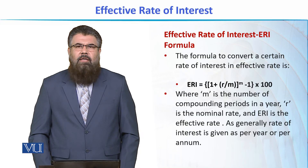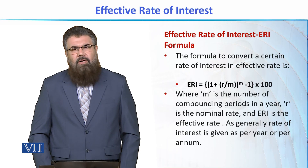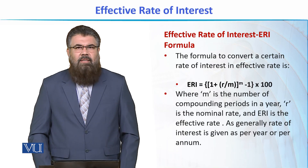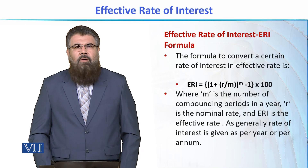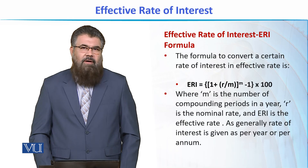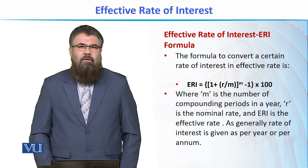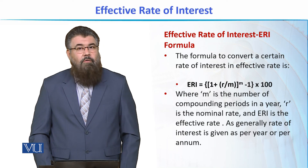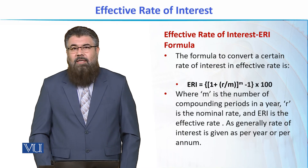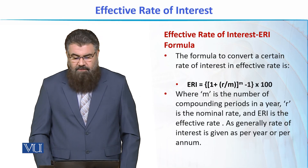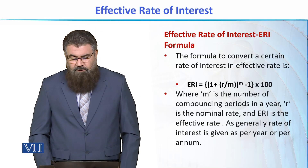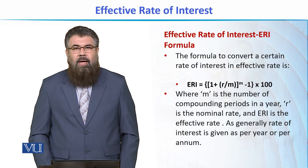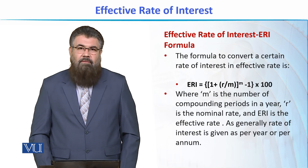We have a formula that actually helps us to convert any given nominal rate of interest into an effective rate of interest. For example, if we have a 10% nominal annual rate of interest and go for quarterly compounding, this 10% might become effectively 10.3% or 10.4%. This formula gives us the accurate, exact effective rate of interest. The formula involves R divided by a factor M, which is also the power of the whole expression.